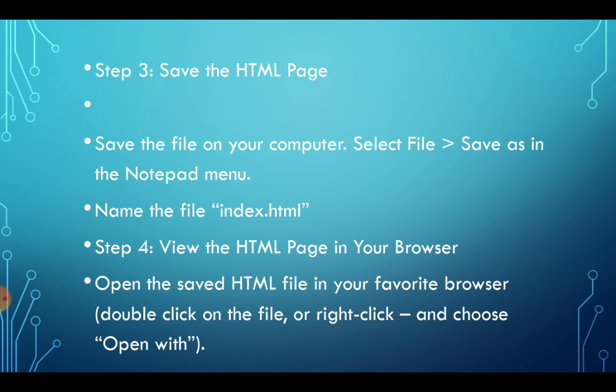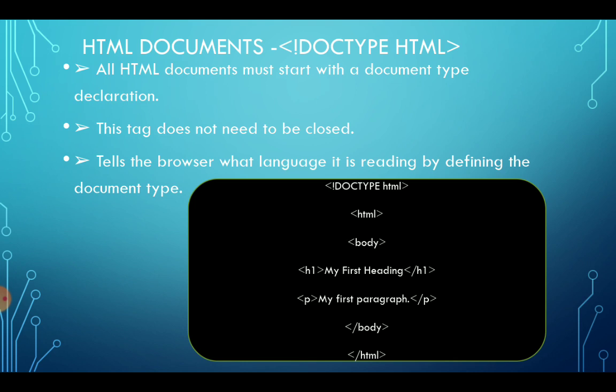All HTML documents must start with the document type declaration: an angular bracket, exclamation mark, then 'DOCTYPE html', then close the angular bracket. This tag does not need a closing slash. It tells the browser what language it is reading by defining the document type. So at the top of your page, you write '<!DOCTYPE html>', then 'html', 'head', and so on, as you can see in the black box.